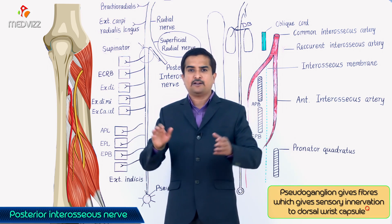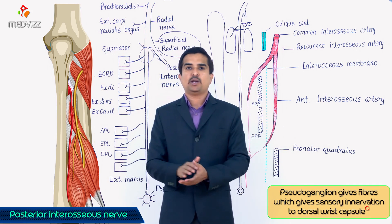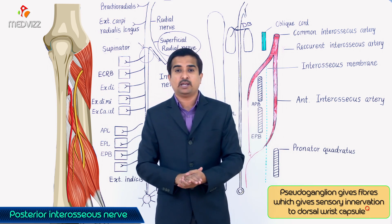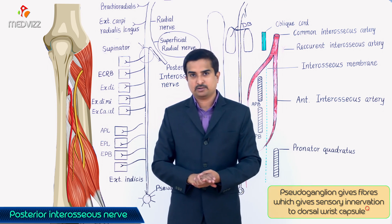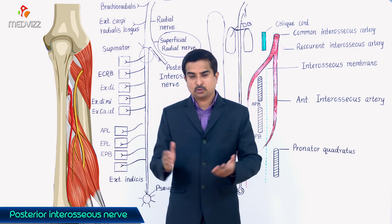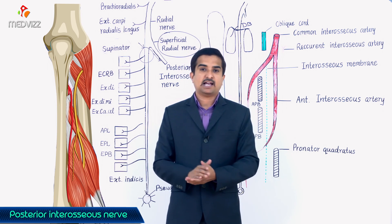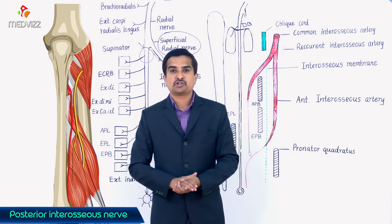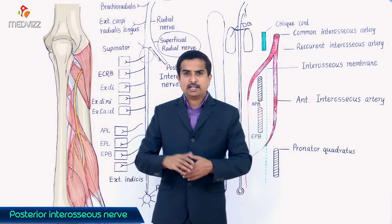The pseudo-ganglion gives off fibers that provide sensory innervation to the dorsal wrist capsule. This completes the course and branches of the posterior interosseous nerve.